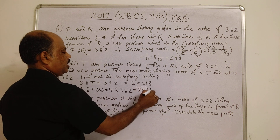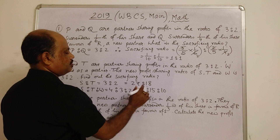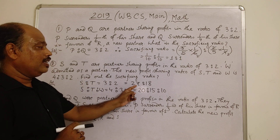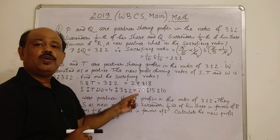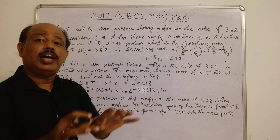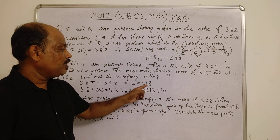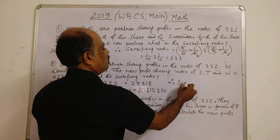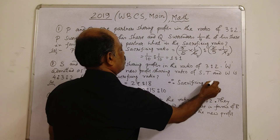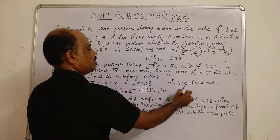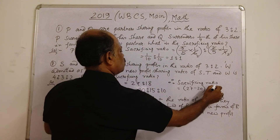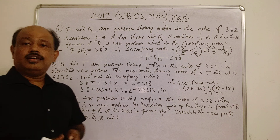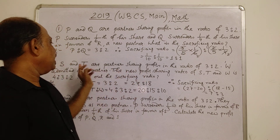You get: initial shares become 27 and 18 (over 45). New shares become 20, 15, and 10 (over 45). So S sacrifices 27 − 20 = 7 and T sacrifices 18 − 15 = 3. Therefore the sacrificing ratio equals 7 is to 3. That is the sacrificing ratio of S and T. Second question done.